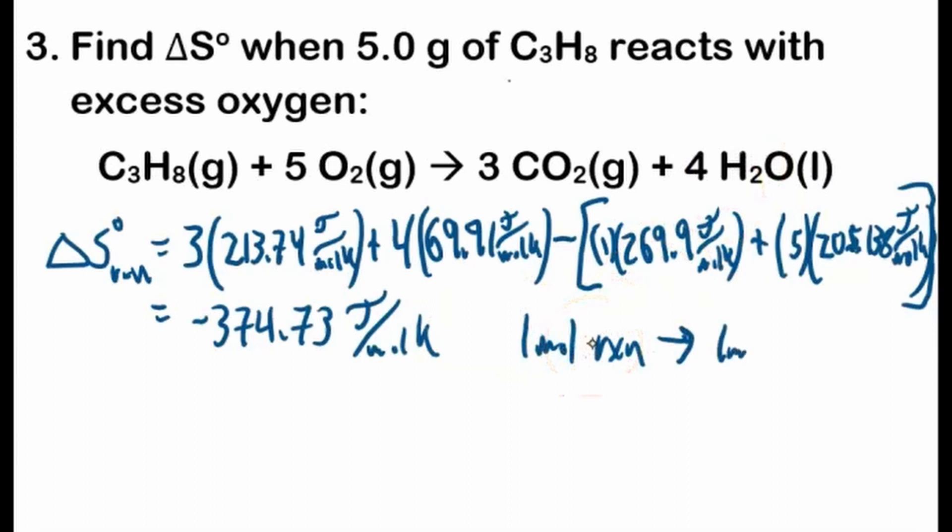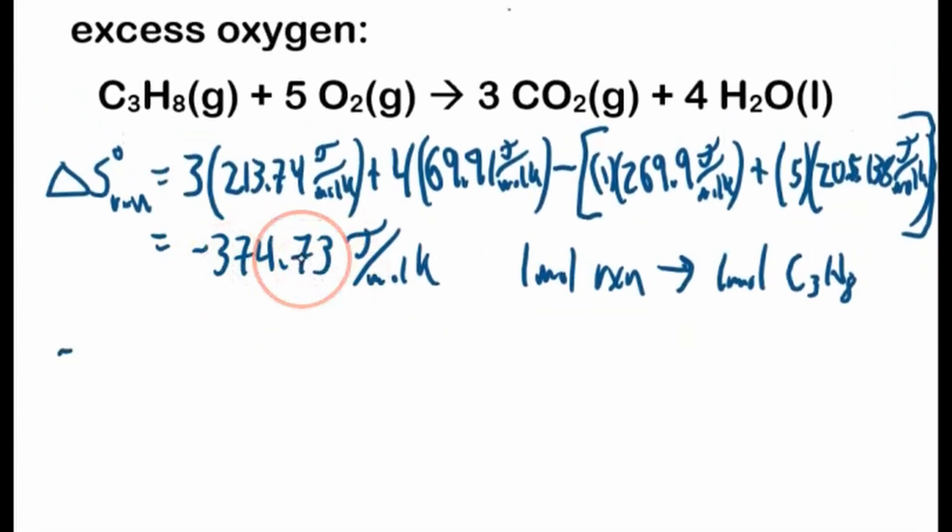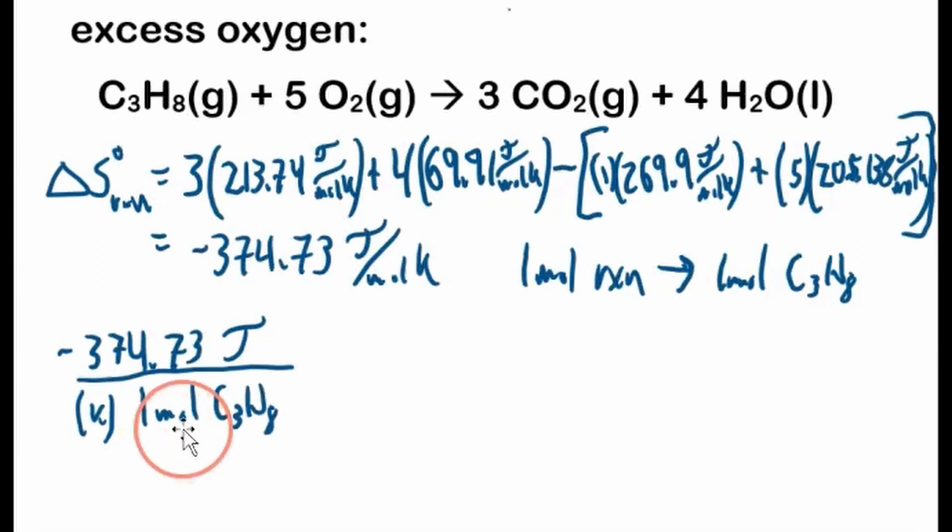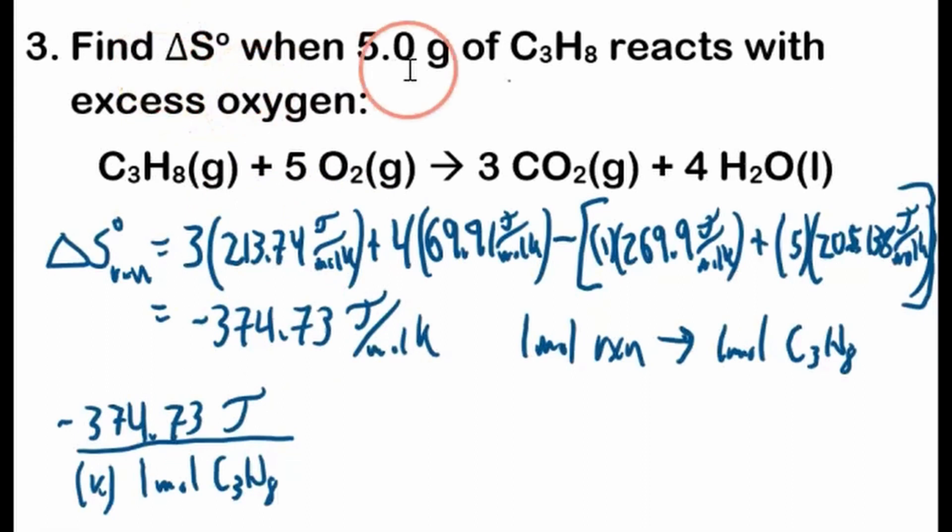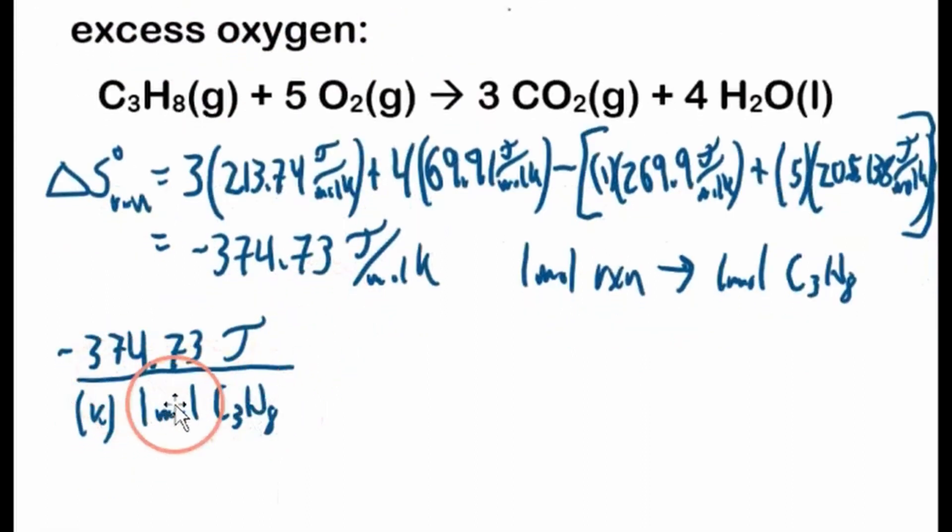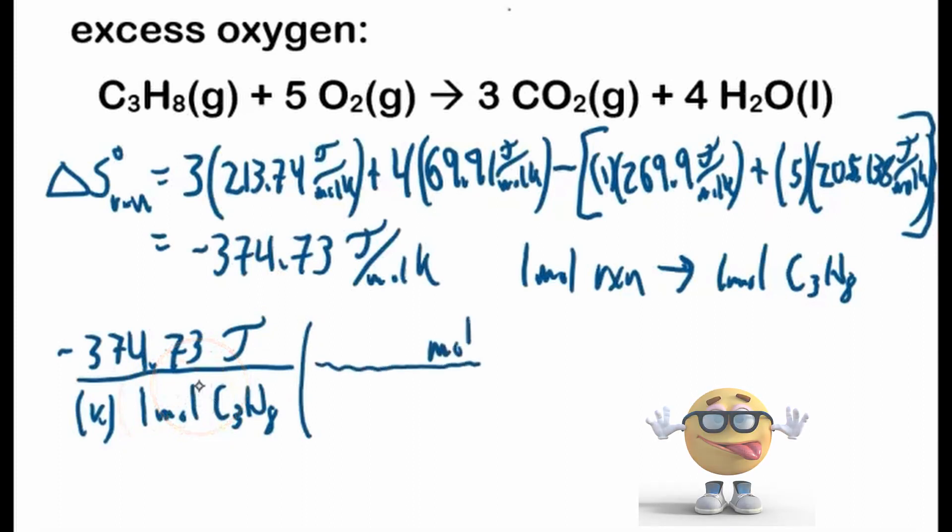We use up 1 mole of C3H8, so we can write this number here, negative 374.73, if this makes it easier, per, now we'll put the kelvin over here, but this is per mole, per 1 mole of C3H8. Now we don't care about moles of C3H8, we care about the change in entropy for 5 grams, and we can't cancel out grams right away, we got to get to grams first. We don't care about joules per mole, we care about joules per gram, so we got to cancel our moles out, so we'll put moles up here for a conversion factor, we'll put grams down here.